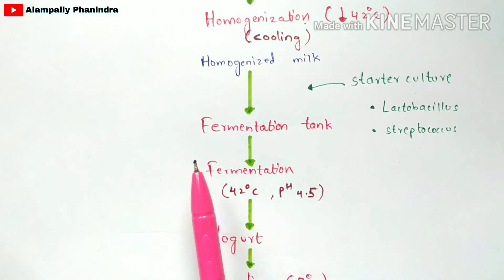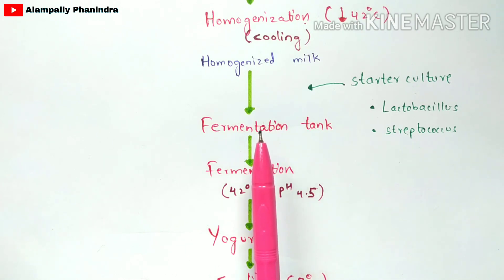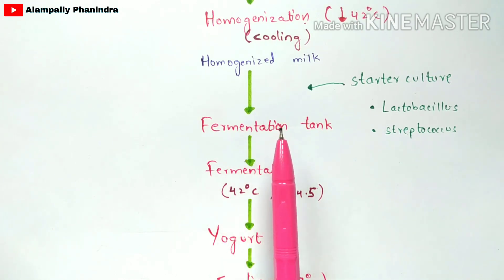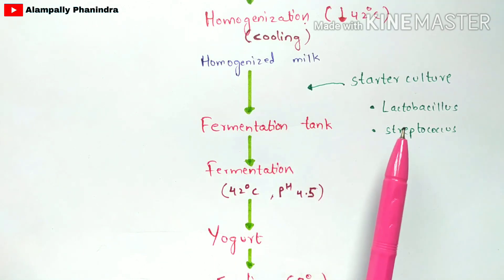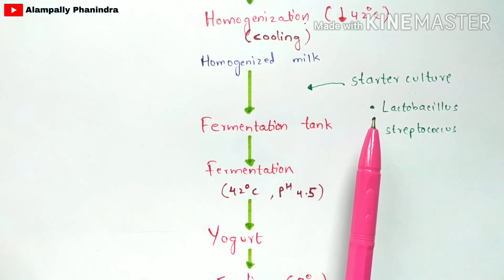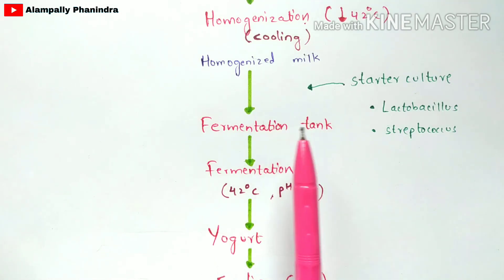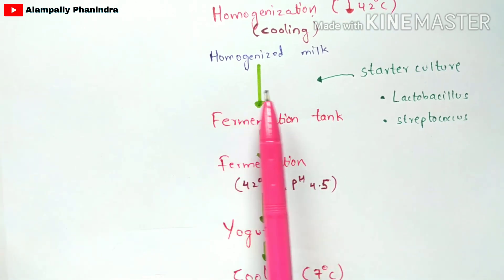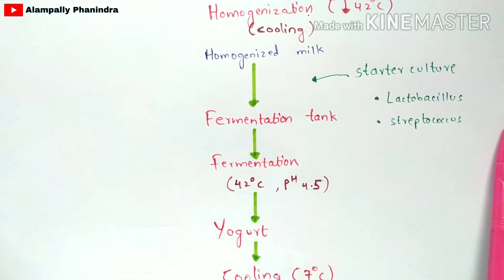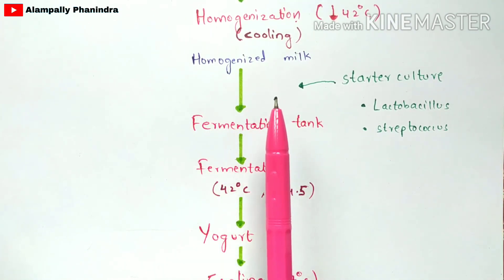The homogenized milk is then placed in a fermentation tank, also called a fermenter or bioreactor. Before adding the homogenized milk, the fermentation tank must be cleaned to avoid contamination. The tank is cleaned with water, and then the homogenized milk is added.